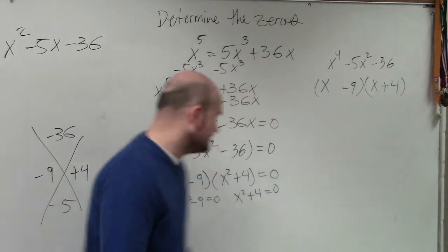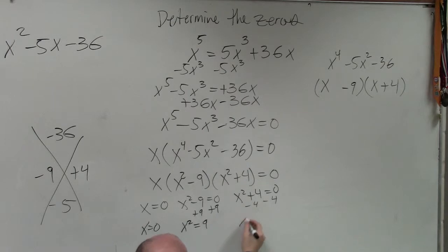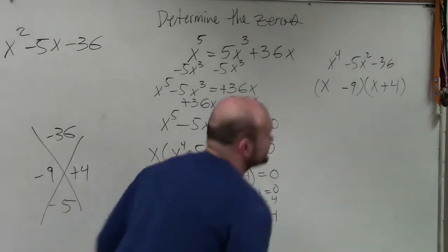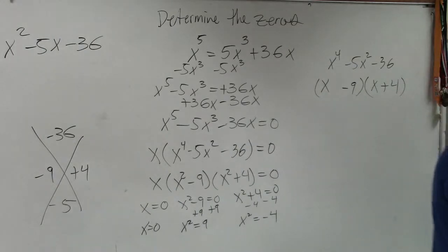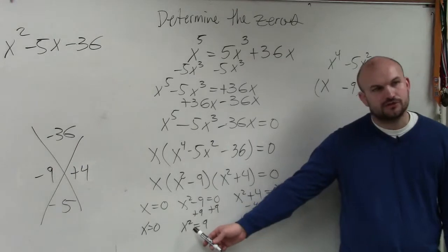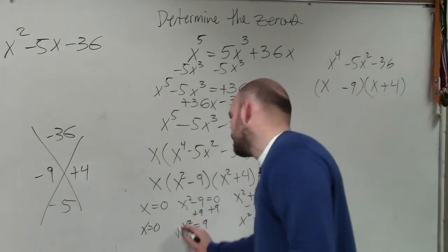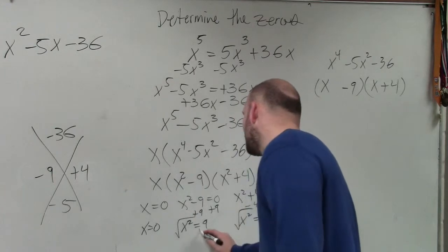And now, we need to solve. So I have x equals 0, and then I add 9, subtract 4, and I get x squared equals 9, and x squared equals negative 4. We're almost done. Now, the last thing we need to do, guys, is to undo the squaring function. So to undo the square, we need to take the square root on both sides.